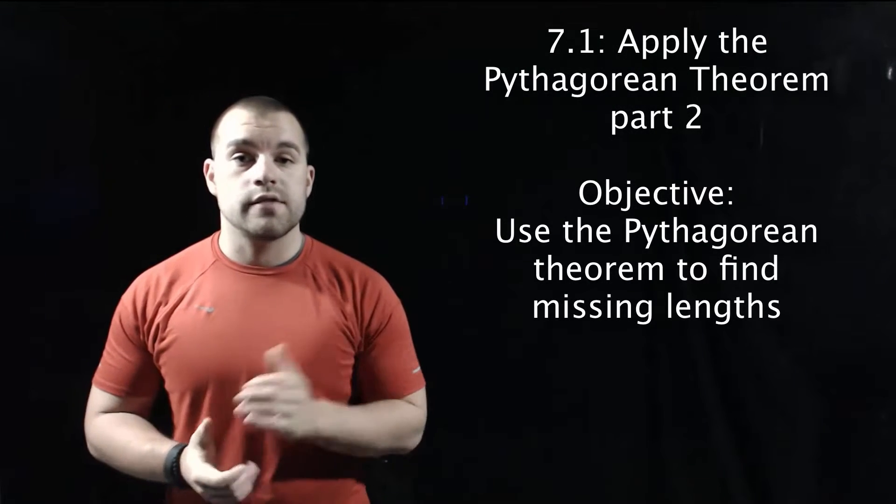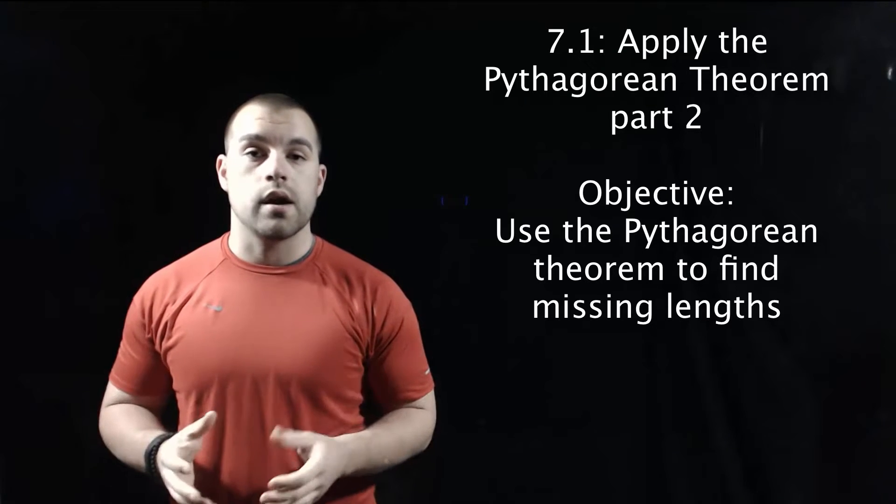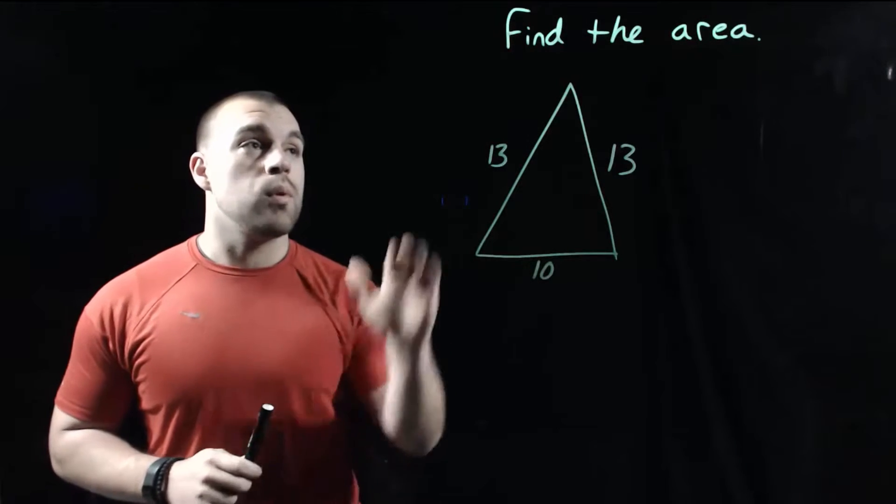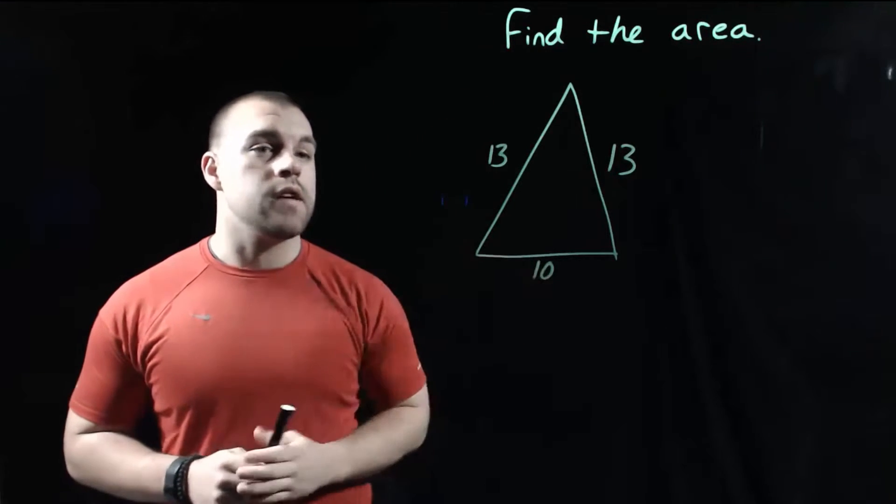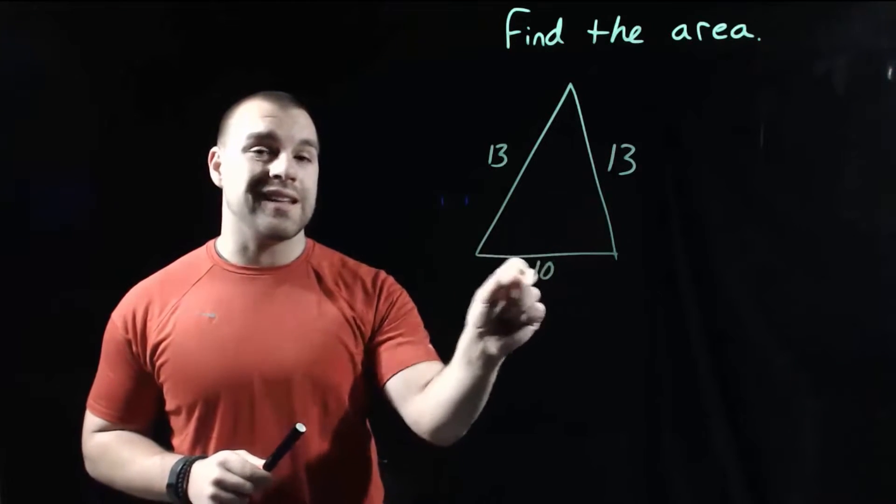Hey guys, Mr. Bakkerberg here. In this video we're going to use the Pythagorean Theorem to find some missing lengths within right triangles. In this example we want to find the area of this isosceles triangle. We've got side lengths of 13, 13, and 10.